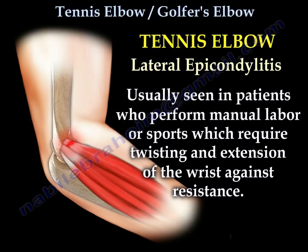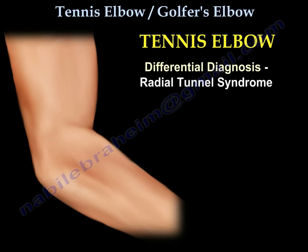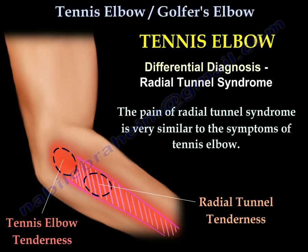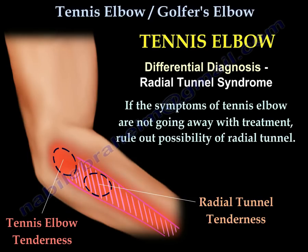It is usually seen in patients who perform manual labor or sports which require twisting and extension of the wrist against resistance. Differential diagnosis: radial tunnel syndrome. The pain of radial tunnel syndrome is very similar to tennis elbow pain; however, the location of the pain is distal to the lateral epicondyle and it radiates down the forearm. If the symptoms of tennis elbow are not improving with treatment, rule out radial tunnel syndrome.